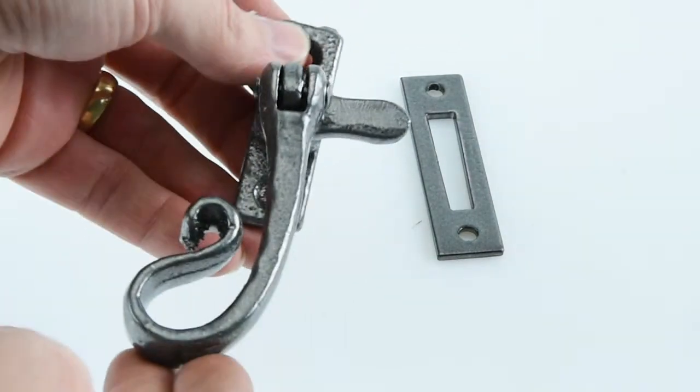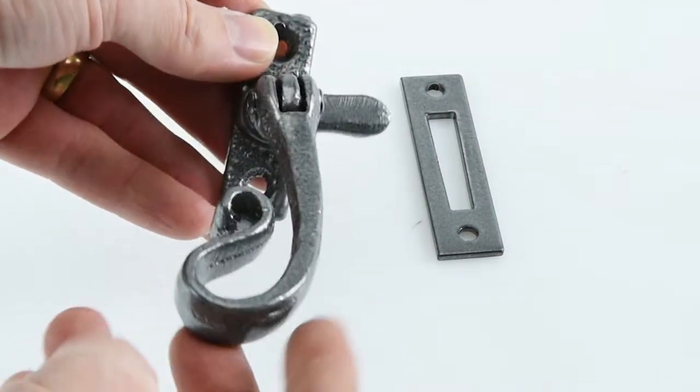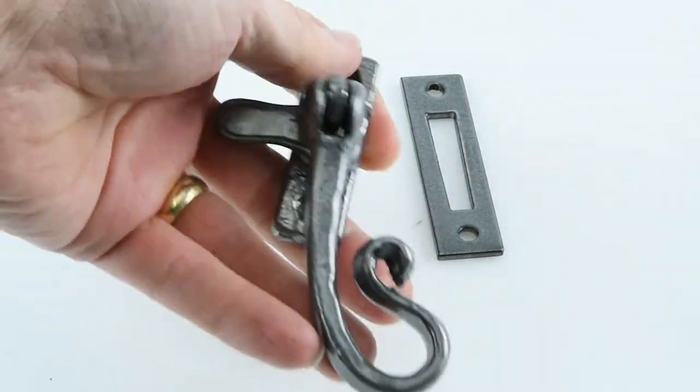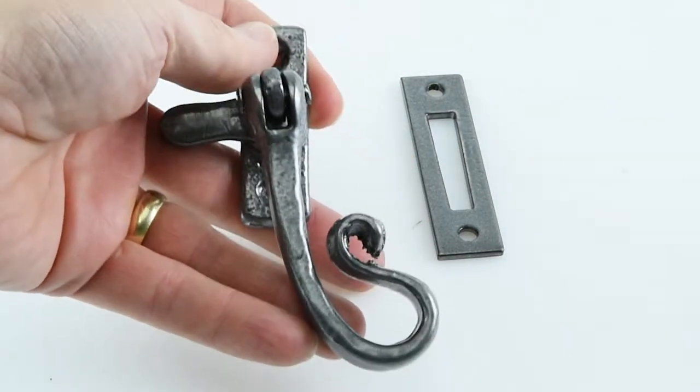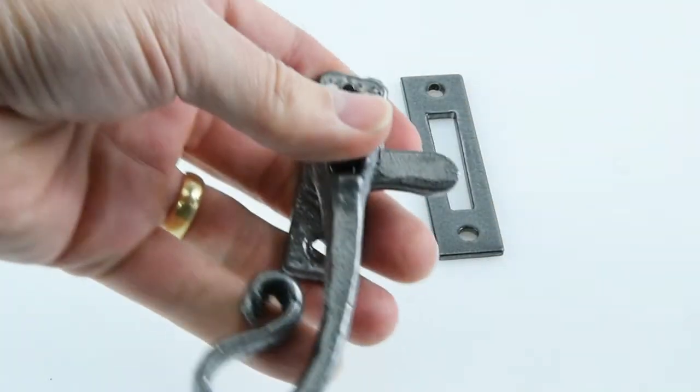These casement fasteners are also universal, so you don't need to worry about whether they're left or right-handed because the handle will flip over and then it just reverses round to be the other way up. It's as simple as that—the handle flips over and then the tongue is now on the other side.